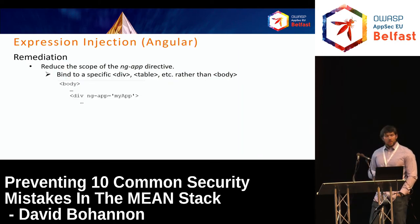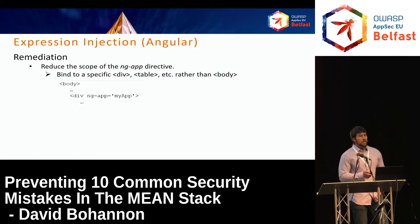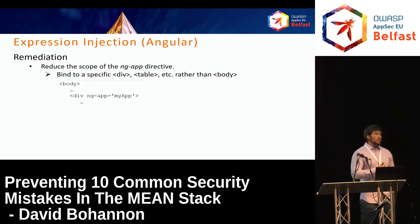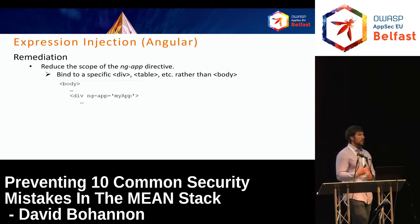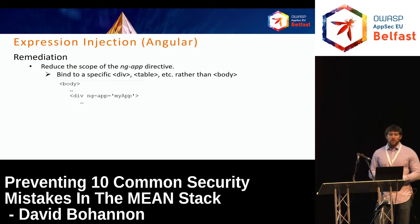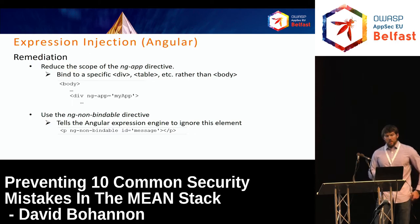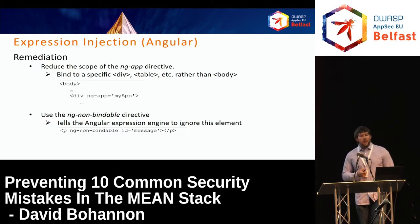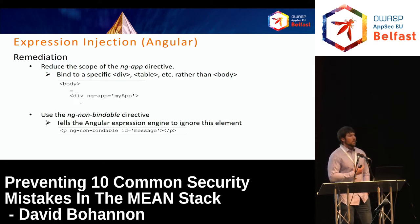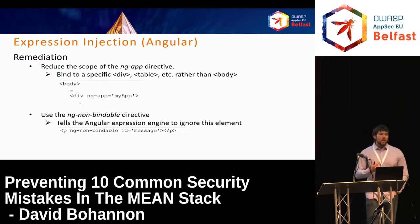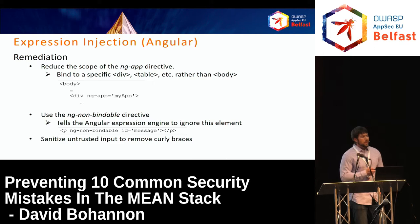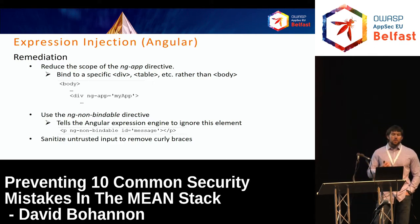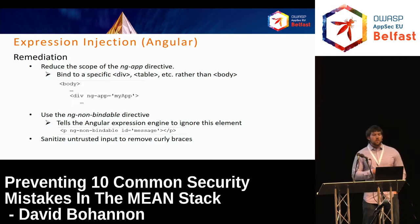To fix Angular expression injection: one option is to reduce the scope of the ng-app directive — instead of binding to the body, bind to a specific div or smaller element, so untrusted input isn't written into the Angular template scope. The second option is to use the ng-non-bindable directive on HTML elements to tell the Angular expression engine not to render that content as part of the template. The third option is to sanitize untrusted input to remove curly braces, since standard HTML encoding solutions don't handle this — typically requiring a custom solution.